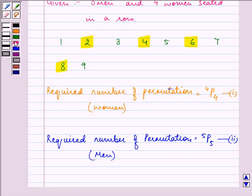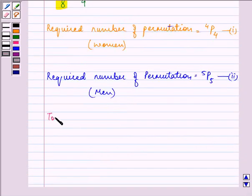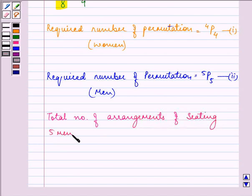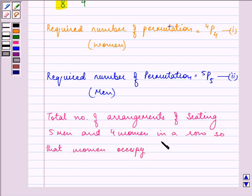Applying the multiplication principle, we get the total number of arrangements of seating 5 men and 4 women in a row so that women occupy the even places.